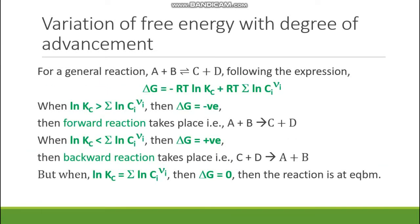Now we have the expression of the reaction isotherm. For the general reaction A + B + C... = P + Q + R..., if this equation is reduced to a special form such as A + B = C + D, then the Van't Hoff isotherm ΔG = RT ln Kc + RT Σᵢ ln Cᵢ^νᵢ can also be applied. For convenience we have taken the equation in concentration terms.